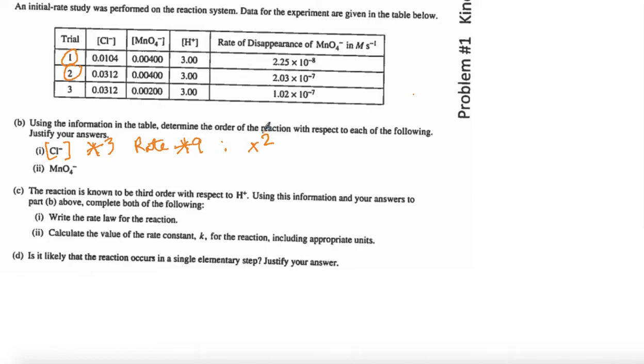Now we do the permanganate. We're looking for an experiment where Cl is not changing. So we're going to use experiment 2 and experiment 3 because we're going to see how permanganate changes. We're changing permanganate and we're leaving chloride ion constant. So what did we do to permanganate? We cut it in half. We divided it by 2. And when we divided it by 2, what happened to the rate? It was divided. The rate was 1 half as well.